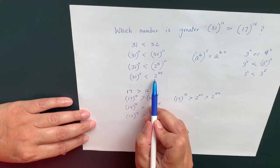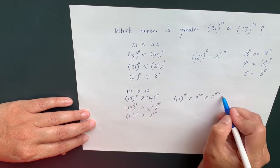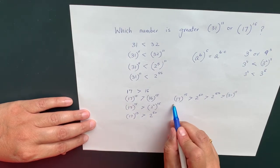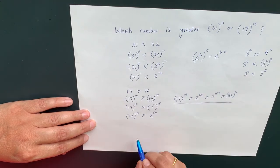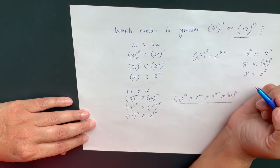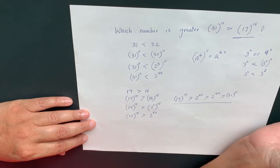And we know 2 to the power of 55 is greater than 31 to the power of 11. So we can easily say that the number 17 to the power of 15 is greater than 31 to the power of 11.